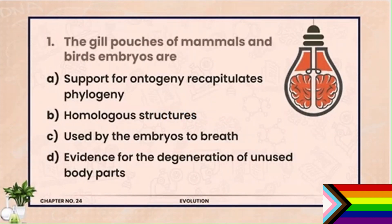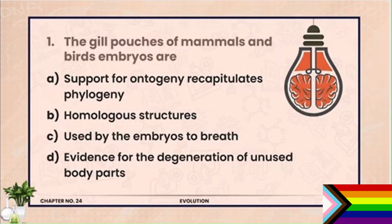MCQ 1. The gill pouches of mammals and birds embryos are — options: (A) support ontogeny recapitulates phylogeny, (B) homologous structures, (C) used by the embryos to breathe, (D) evidences for degeneration of unused body parts. The correct answer is ontogeny recapitulates phylogeny. Embryology discuss ki gayi hai, aur embryology ko support karne wali theory hai ontogeny recapitulates phylogeny, iska matlab ye hai ki different embryos ki development me bahut se stages ek doosre se similarity show karte hain.